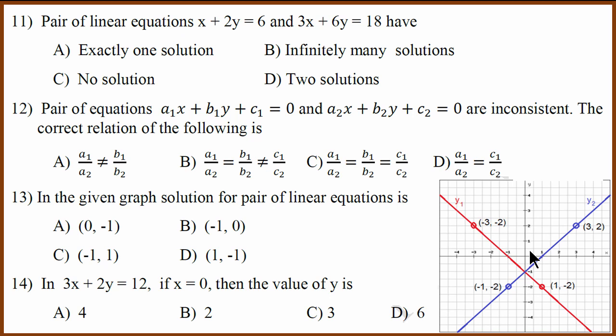Now 11th question to 14th question are pair of linear equation questions. The first question has infinitely many solution because if you do A1 by A2, B1 by B2, C1 by C2 you will find that they are all the same. It will be coincident line and coincident lines have infinite many solution. Second question says they are inconsistent. Inconsistent means the lines are parallel. So B is correct. The second question answer is B.